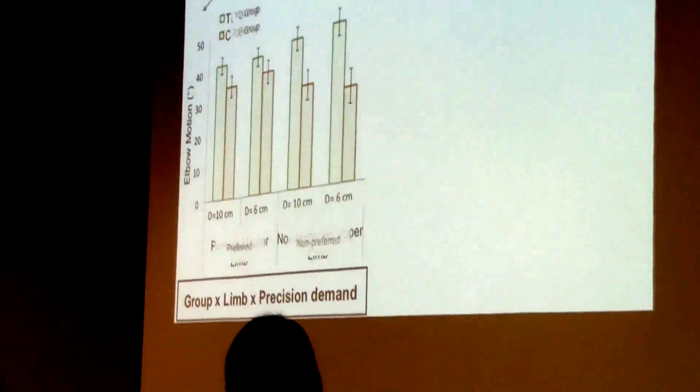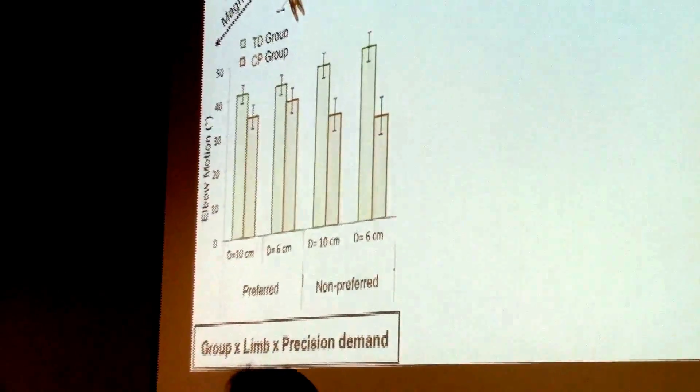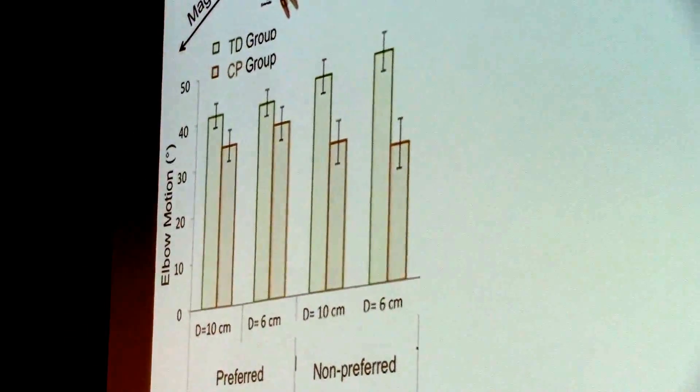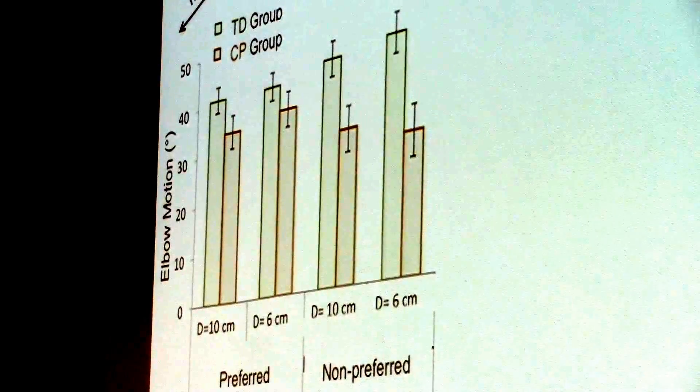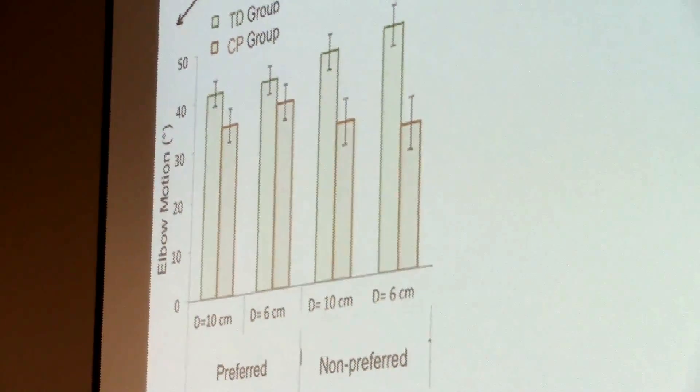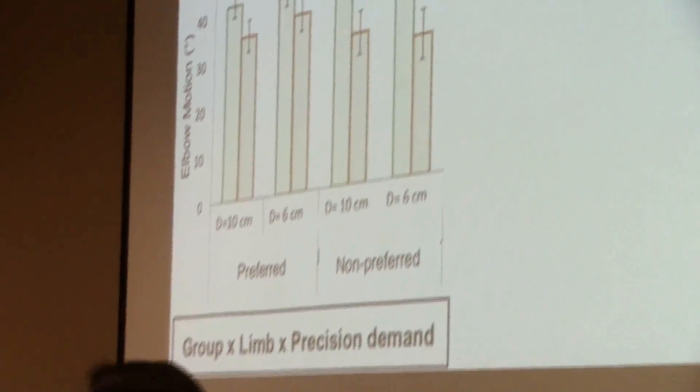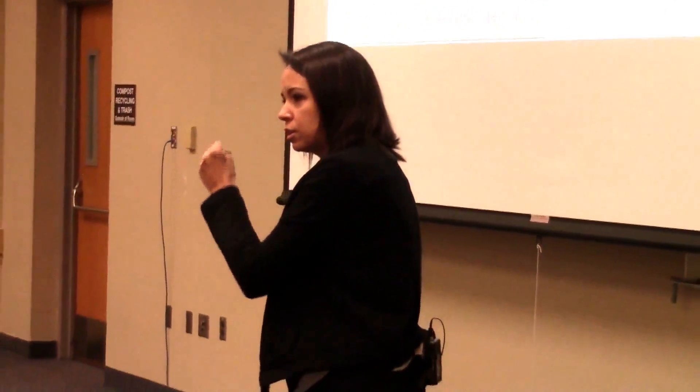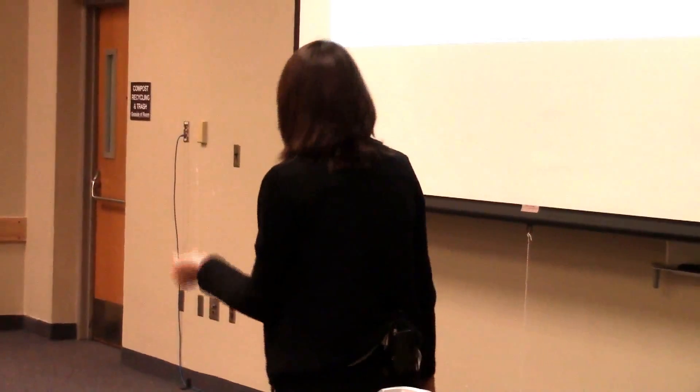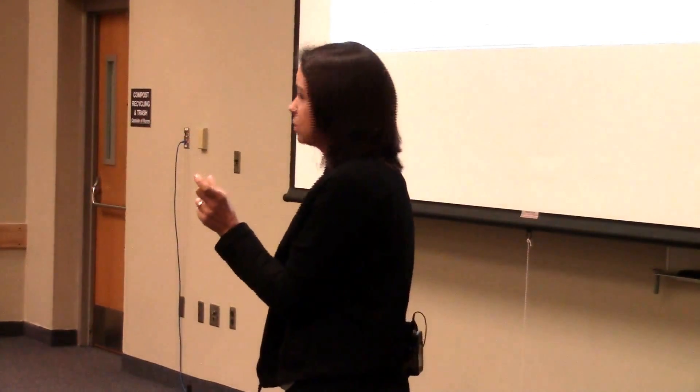Now movement pattern. Let's look at the elbow movements first. We again got a three-way interaction. Here on the y-axis now we have the magnitude of elbow motion. And as you can see, as expected from the literature, CP children had smaller magnitudes, but that was not context independent again. They showed up only when the non-preferred limbs were compared and in particular for the smallest target. Differences were greater there.